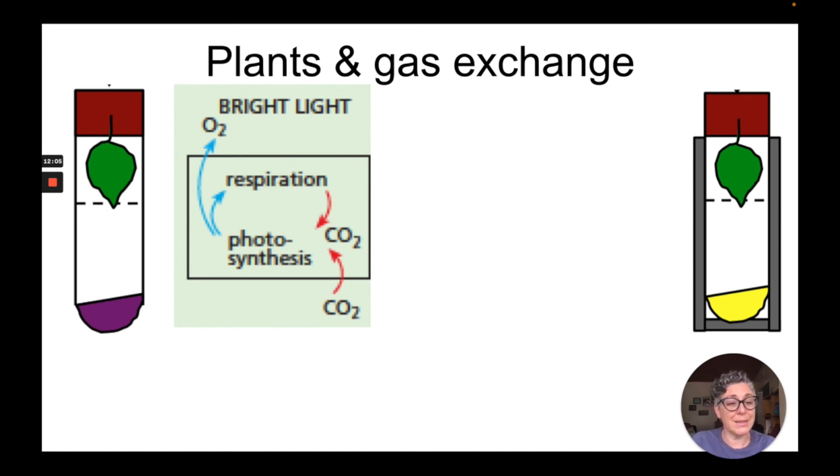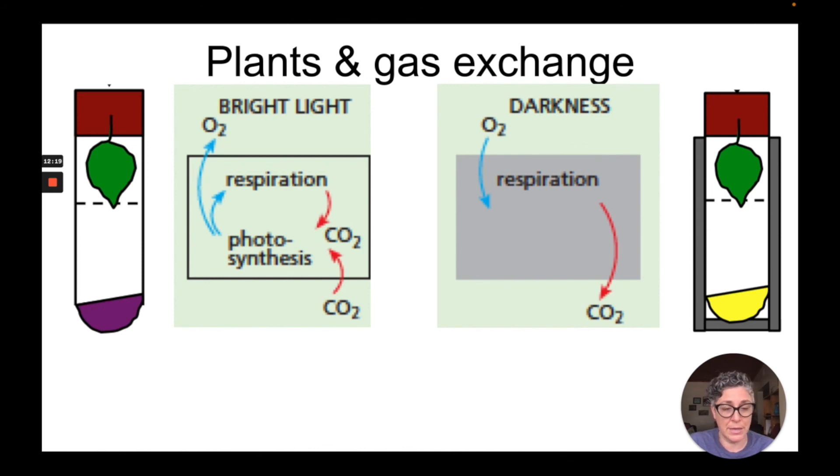Now the plant that was in the dark, turning the hydrogen carbonate indicator yellow, is a plant that is only doing respiration. That is a plant that takes oxygen from the atmosphere and produces carbon dioxide. And that is what this experiment is showing to us: that plants do respiration and photosynthesis during the day and only do respiration at night.